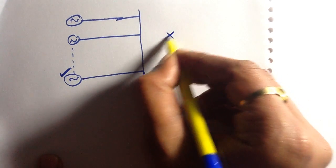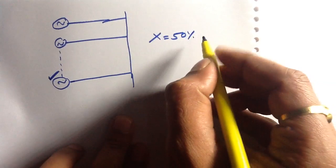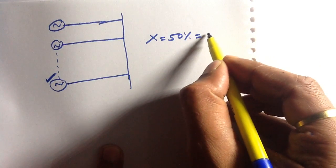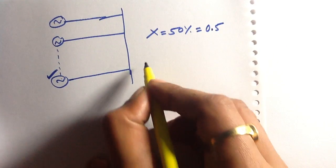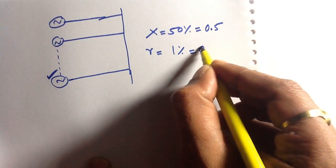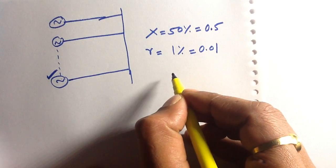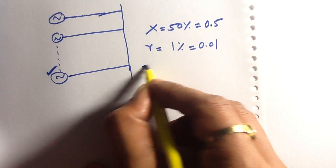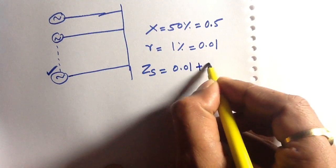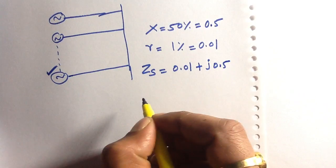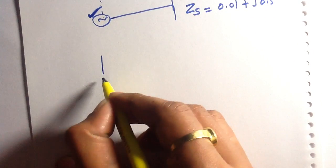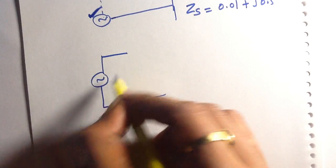The reactance of the alternator is 50%; converting this percentage value to per-unit gives 0.5 per unit. The resistance is 1%, which converts to 0.01 per unit. Therefore, the per-unit value of the synchronous impedance Z_S equals 0.01 + j0.5 per unit.